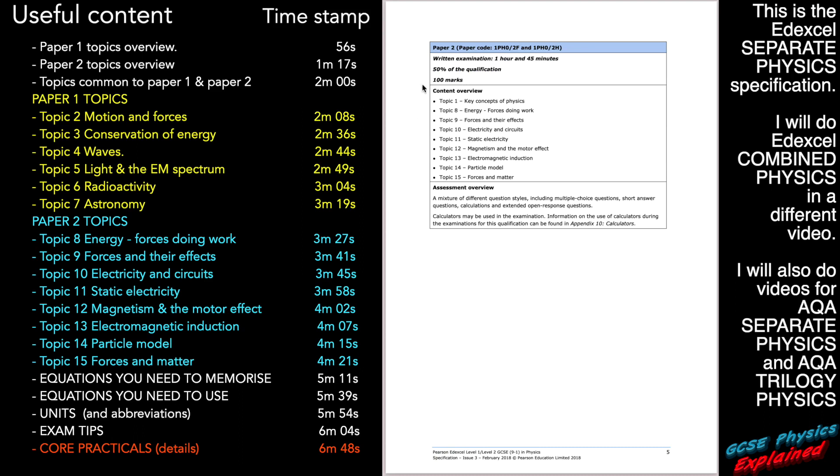You'll also have to sit the paper two. That is one hour and 45 minutes. That's the other 50% of the qualification, it's another 100 marks and these are the topics that you'll be tested on that paper. This is the triple physics, not the combined physics.